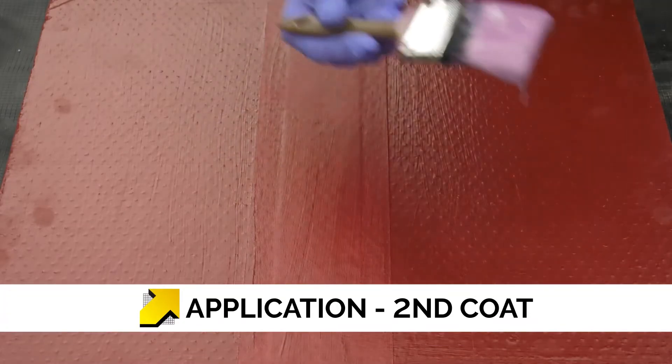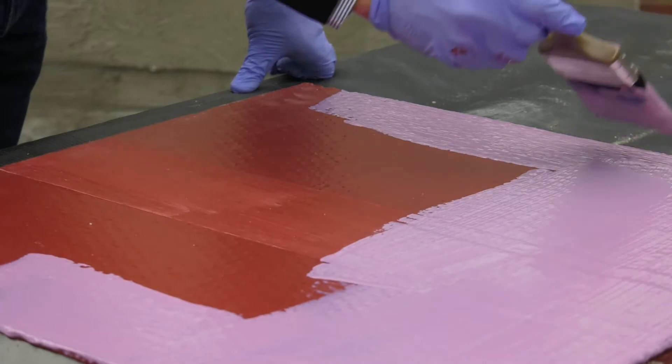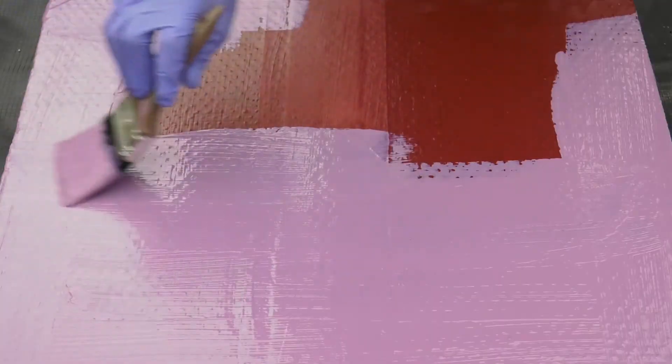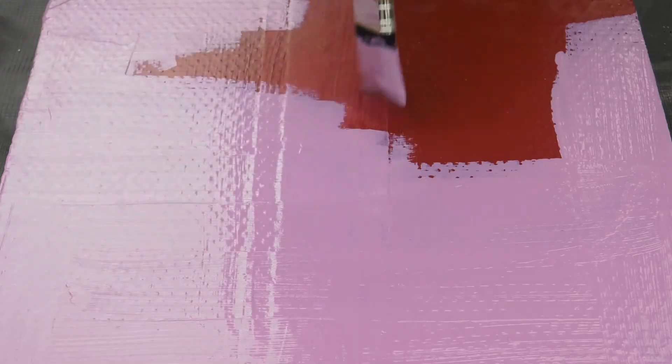When the first coat has cured and turned dark red, apply the second coat in the opposite direction to the first. Allow the product to fully cure and protect whilst curing from rain or frost.